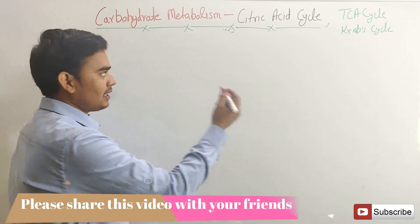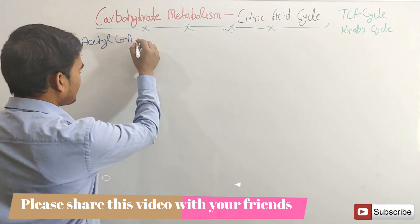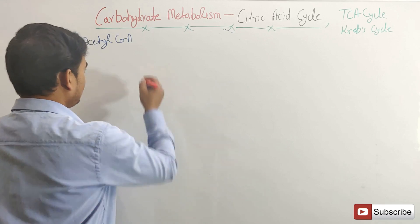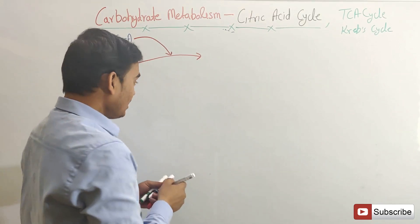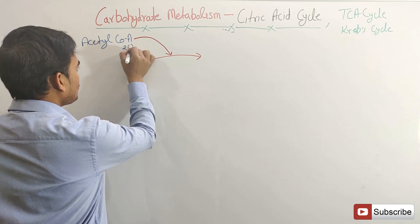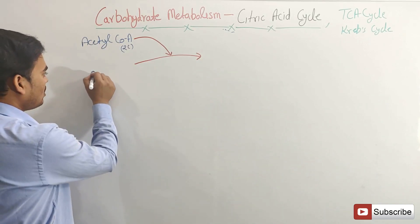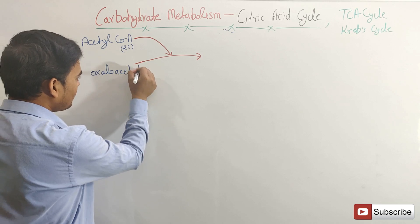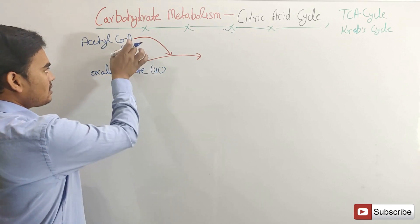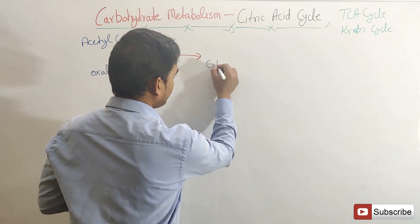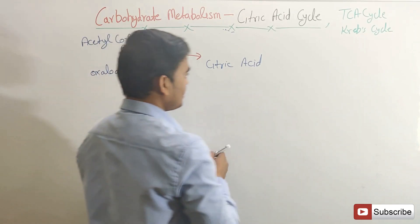When the acetyl-CoA is synthesized, it will come into the citric acid cycle. This acetyl-CoA is a two-carbon molecule. It takes four carbons from another compound, that is oxaloacetate. Oxaloacetate is a four-carbon compound. This two-carbon and four-carbon combine and form citric acid, which is a six-carbon compound.